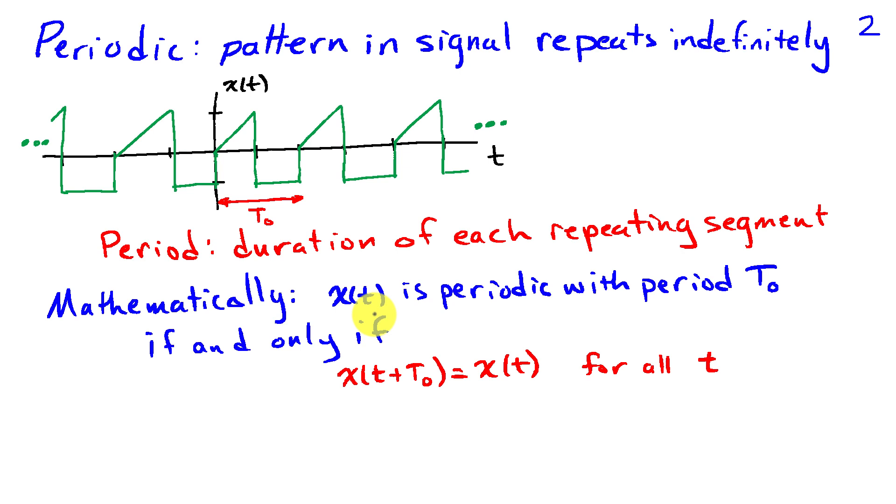Mathematically we can define the period of a periodic signal by stating that x of t is periodic with period capital T naught if and only if x of little t plus capital T naught is equal to x of little t for all time t.